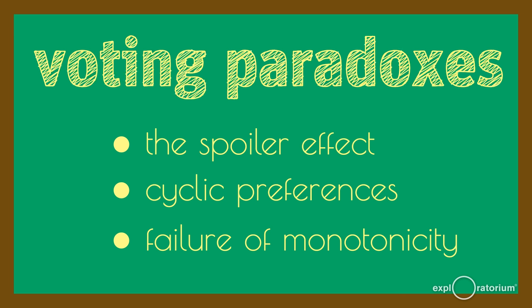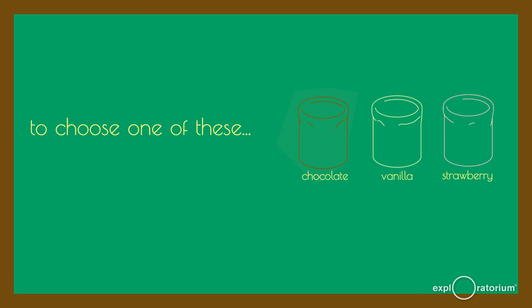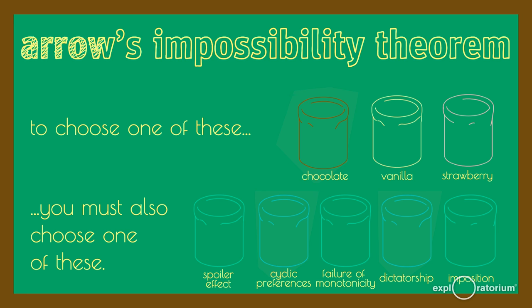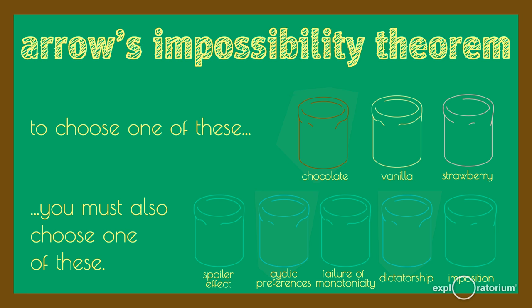When we cast a vote, we help choose an ice cream flavor. When we select a voting method, we are effectively choosing from a menu of voting paradoxes. This insight about the limitations of group decision-making is known as Arrow's impossibility theorem. Kenneth Arrow later won the Nobel Prize in economics for this result, which set the stage for modern social choice theory — the mathematical study of how groups make decisions.